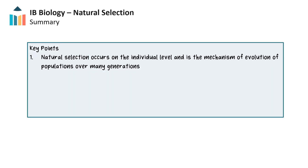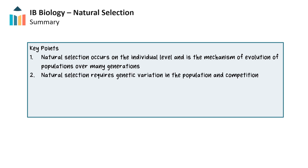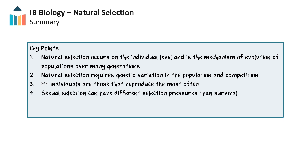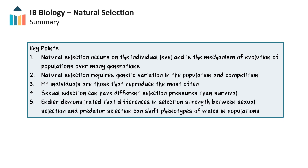In this video, we saw that natural selection occurs on the individual level and is the mechanism of evolution of populations over many generations. In order for natural selection to occur, there must be genetic variation in the population as well as competition. Fitness refers to individuals that are selected to reproduce, while those that reproduce most frequently are the most fit. Sexual selection is the selection pressure caused by mate selection and can have different selection pressures than survival. Endler demonstrated that differences in selection strength between sexual selection and predator selection can shift the phenotypes of males in populations.